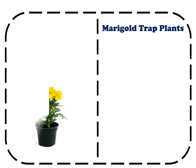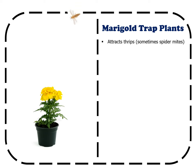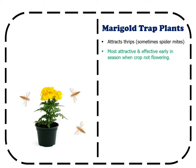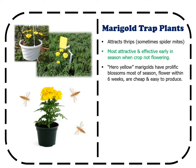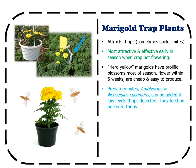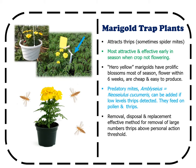Marigold Trap Plants: Yellow marigolds are very attractive to thrips and sometimes spider mites. These are most attractive and effective early in the season when the majority of the crop is not flowering. The variety Hero Yellow is a good option — it has prolific blossoms throughout most of the season and flowers within six weeks, making it cheap and easy to produce. If low levels of thrips are detected, the predatory mites Neoseiulus cucumeris could be added; these mites feed on pollen in addition to thrips. If populations are above your action thresholds, removal and replacement with new plants may be effective. Sticky cards placed within add an additional trapping and monitoring technique.